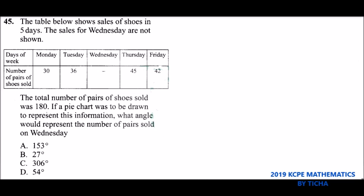If a pie chart was drawn to represent this information, what angle would represent the number of pairs sold on Wednesday? In actual sense, the pie chart can represent this information, but the first thing we need to do is to find the number of shoes that were sold on Wednesday.